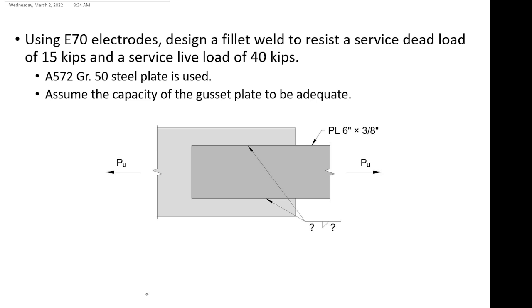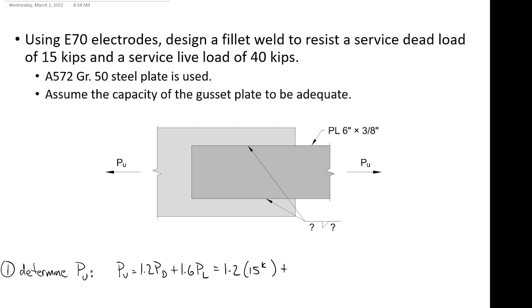Step one with just about any design problem is to determine PU. At this point, I'm hoping factoring the load is getting to be pretty instinctual — we shouldn't have any scenario where we forget to factor the load. What's my factored load for this connection going to be? 82 kips.